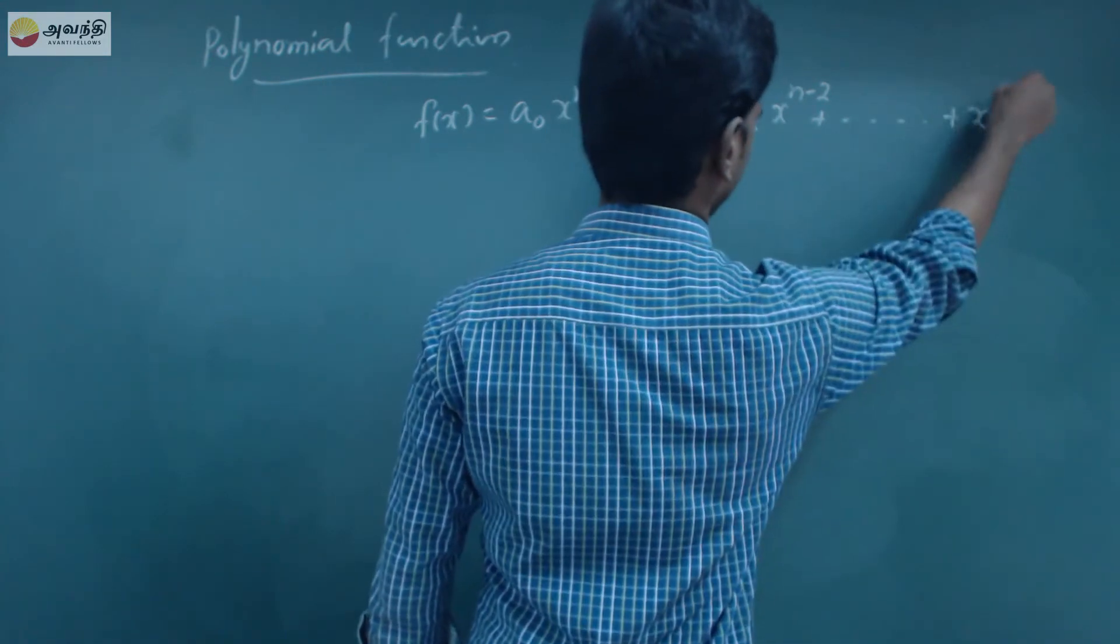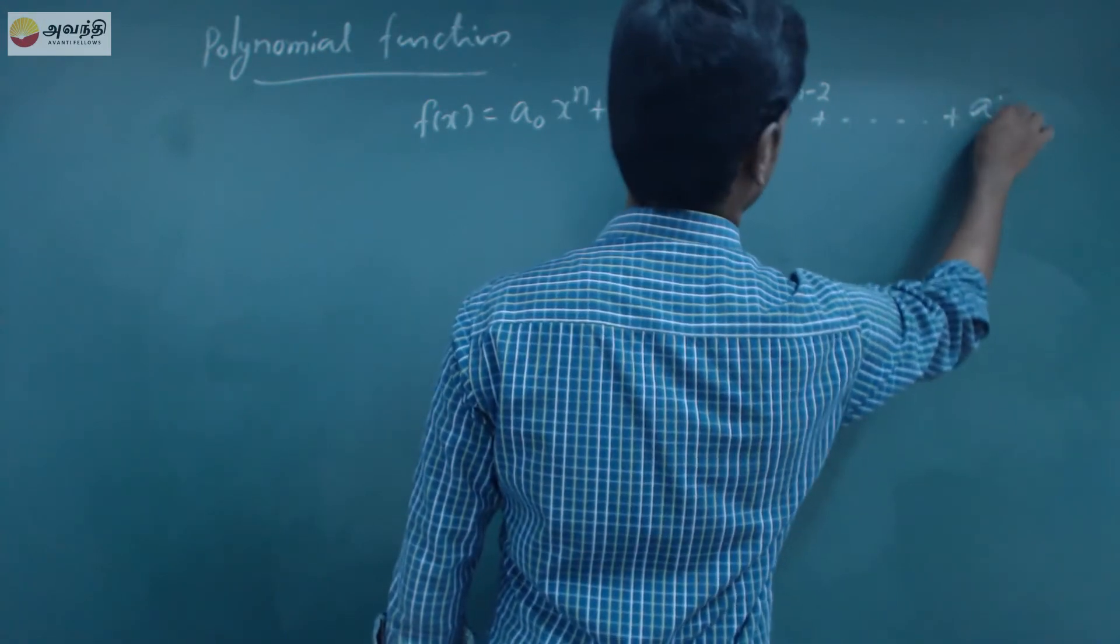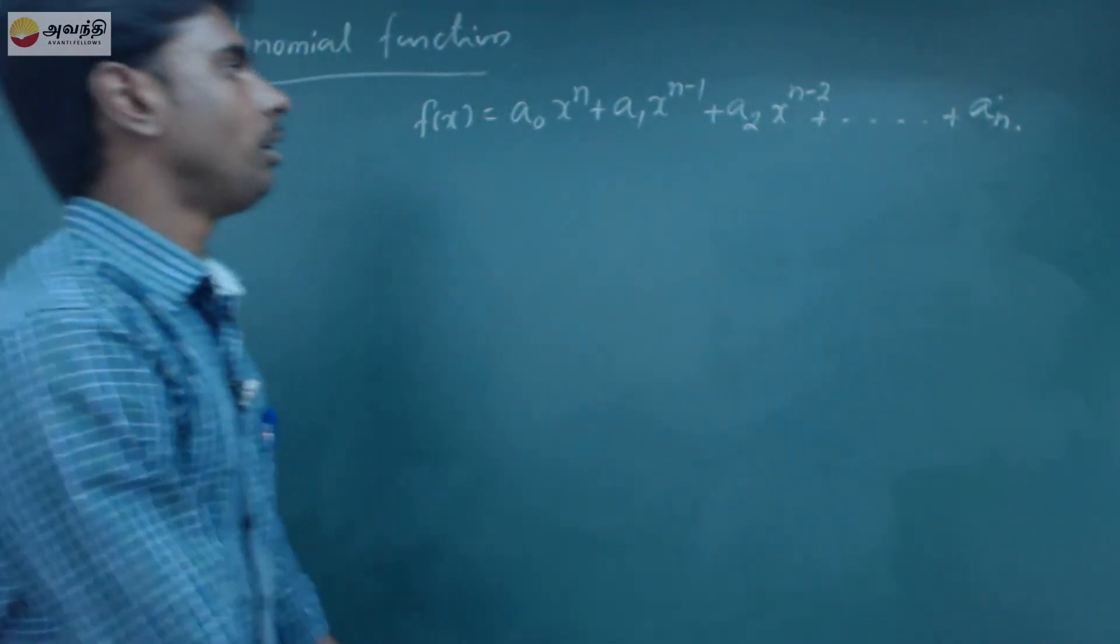Plus a2 x power n minus 2 plus etc. up to x power 1. That is a n in one last time.